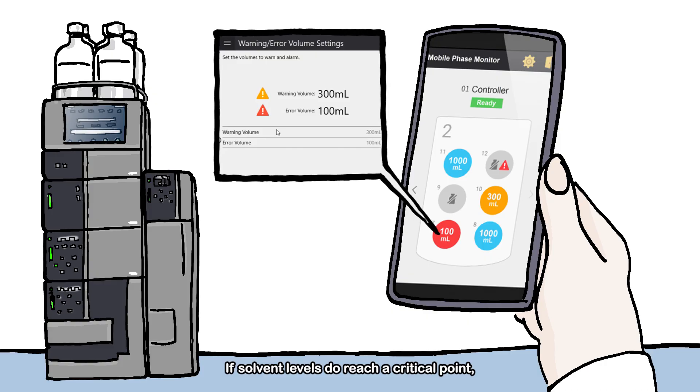If solvent levels do reach a critical point, mobile phase monitor will stop the analysis, saving the system from running dry, and preventing maintenance and downtime required for system recovery.